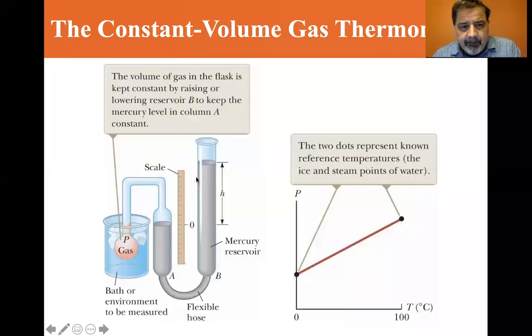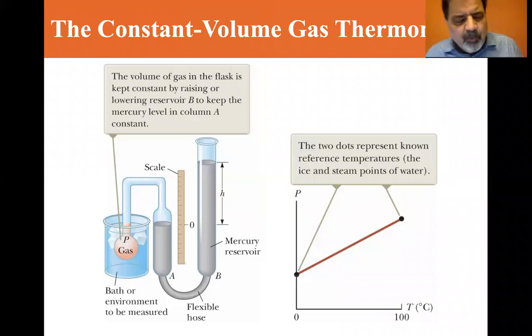We have a flask with a gas under pressure, and this is called the constant volume gas thermometer. Inside the ice bath, you adjust the flask B to where it's at some reference point we call zero. It's a constant volume, so we set and adjust it where we want the volume that we desire, and we know that the pressure at that point is given by the pressure is equal to atmospheric pressure P0 plus rho gh, where rho is the density of the mercury, G is the gravitational acceleration, and H is the height of the column.